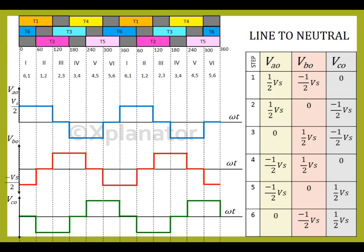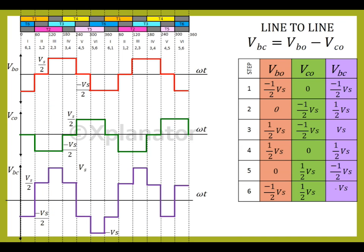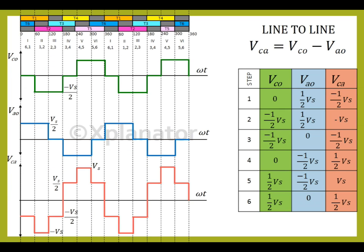For obtaining line to line plot, we subtract the line to neutral plots. So, to plot VAB, subtract VBO from VAO. We observe that the highest magnitude for line to line voltage is Vs and lowest is minus Vs. For plotting VBC, subtract VCO from VBO. This plot looks similar to VAB but with a phase shift. And lastly, voltage VCA is the difference between VCO and VAO.